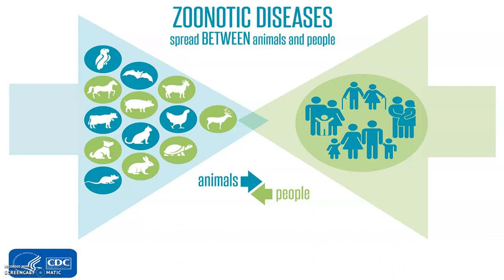Zoonotic diseases are those diseases which spread between animals and people. CDC defines it simply as diseases that spread between animals and people.